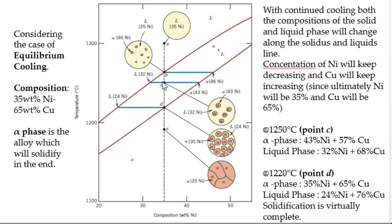The alloy solidifies through a mushy zone—a combination of solid and liquid. The composition of solid and liquid are found from the solidus and liquidus lines. Cooling further brings us to point D, the solidus point, where the alpha phase composition is 35% nickel and 65% copper.